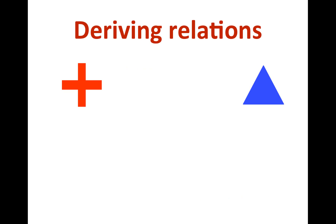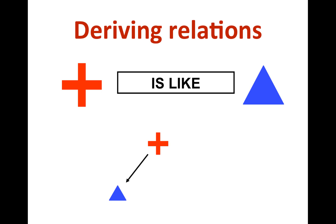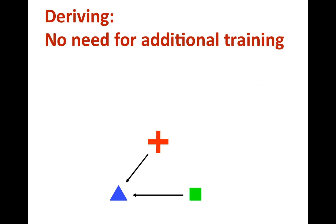One amazing thing about language is that we can produce and understand relations that we have never been directly taught — this is what we often call the generativity of language. From an RFT perspective, it happens through the process of derivation. Let's use two pictures that don't share a particular relation. If we use the contextual cue 'is like,' you can now respond to the red cross the same way you respond to the blue triangle. If we also tell you that this green square is like the blue triangle, you learn these two relations through direct training. But with no additional training, you are able to derive the relations that go in the reverse direction. This is what we call mutual entailment.